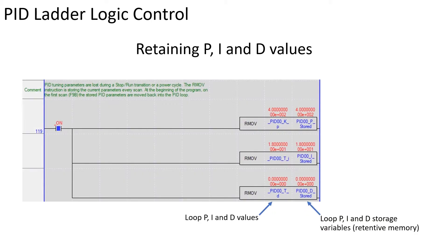In the XGB PLCs, the PID variables are not retained on a power cycle or a stop to run transition. Rung 119 preserves the operational PID values.